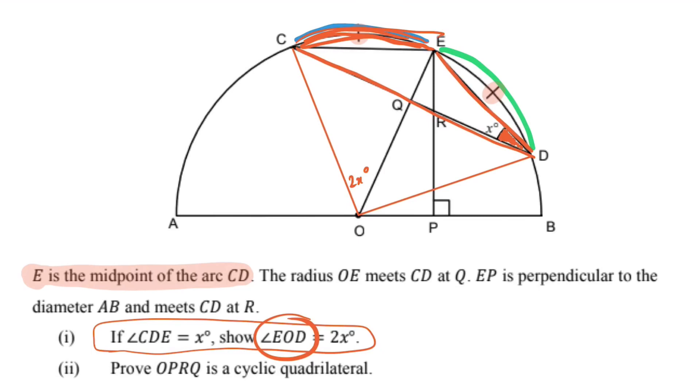Unlike that guy, angle COE is, in fact, standing on the same arc as CDE. So, I'm going to say that COE is double, it's 2x, because it is double angle CDE.